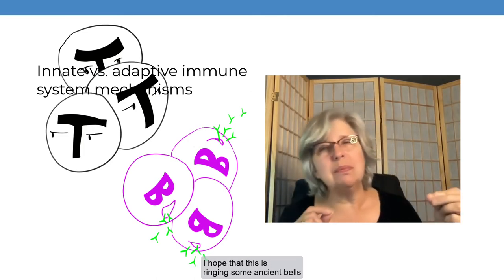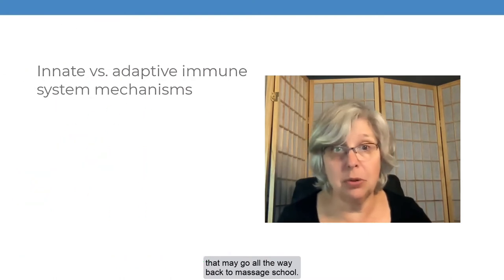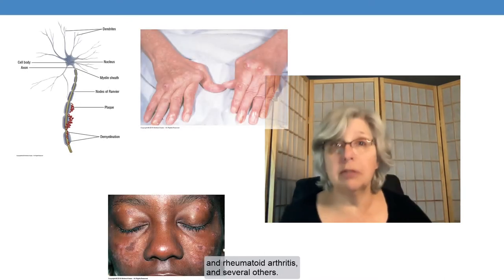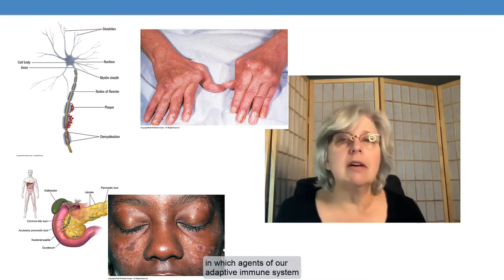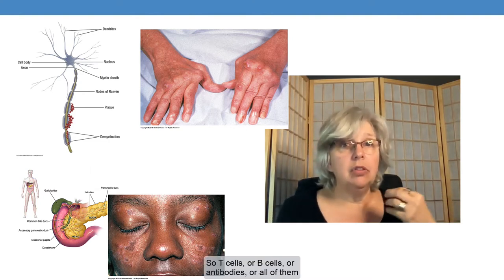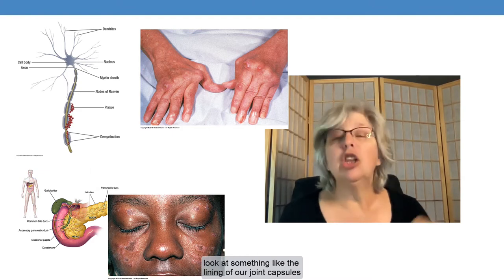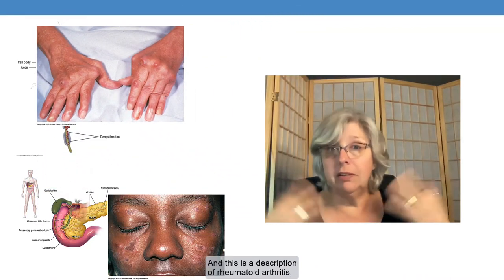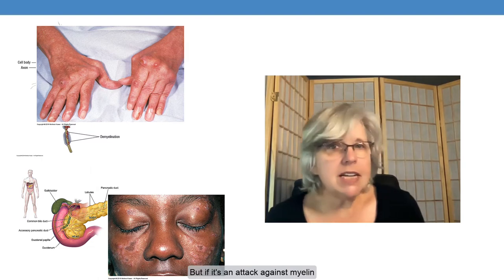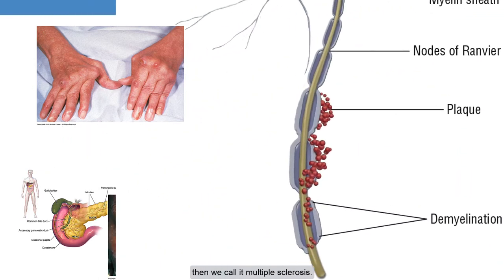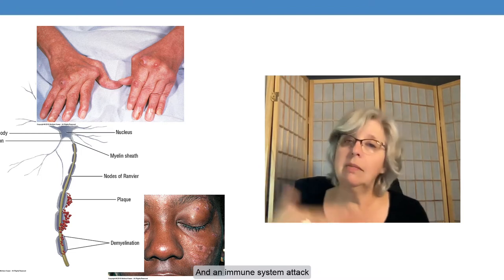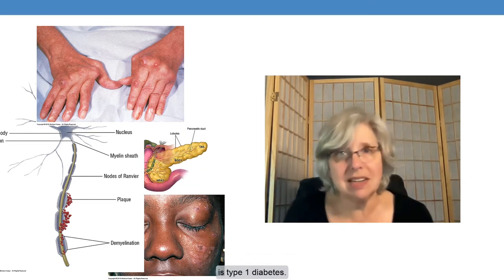I hope that this is ringing some ancient bells that may go all the way back to massage school. Autoimmune diseases — this includes things like multiple sclerosis, lupus, rheumatoid arthritis, and several others — these are conditions in which agents of our adaptive immune system make a mistake. So T-cells or B-cells or antibodies, or all of them, look at something like the lining of our joint capsules at our knuckles and think that the cells in there are trying to kill us, so they try to kill those cells first. This describes rheumatoid arthritis. An attack against myelin in the central nervous system is multiple sclerosis; against myelin in the peripheral nervous system is Guillain-Barré syndrome.